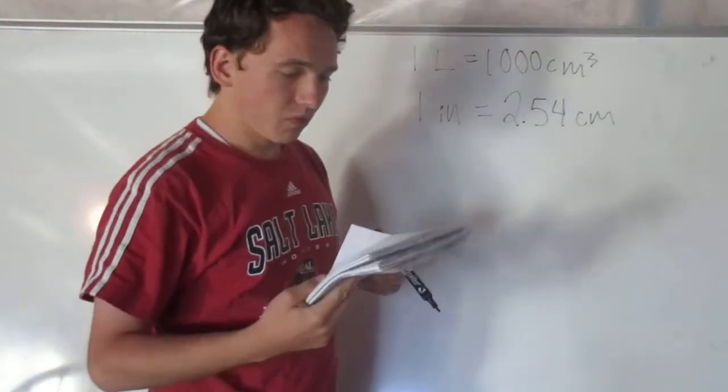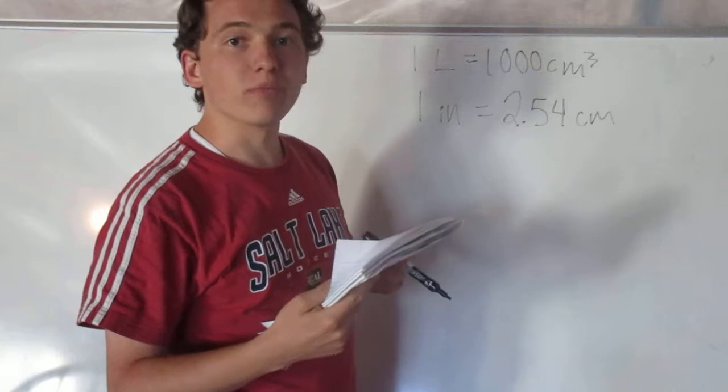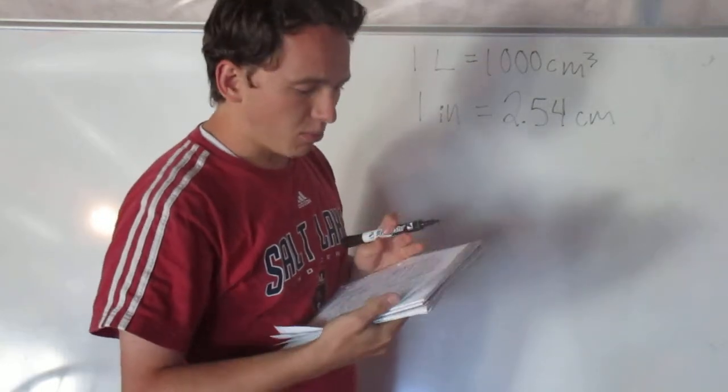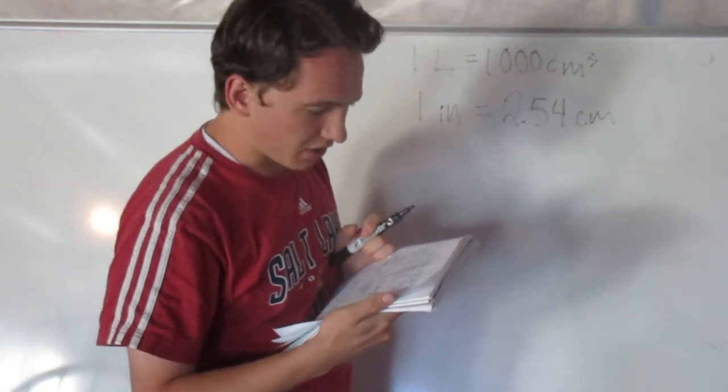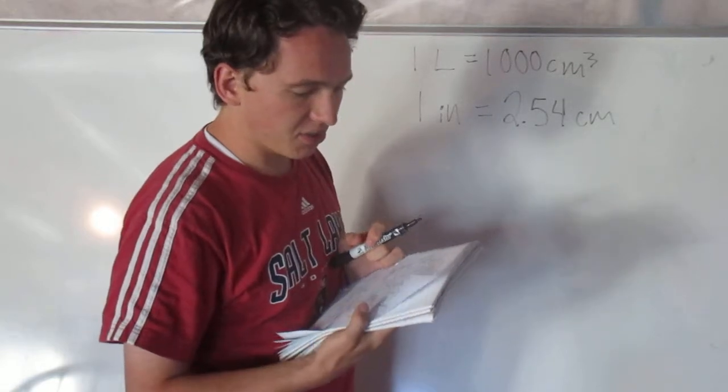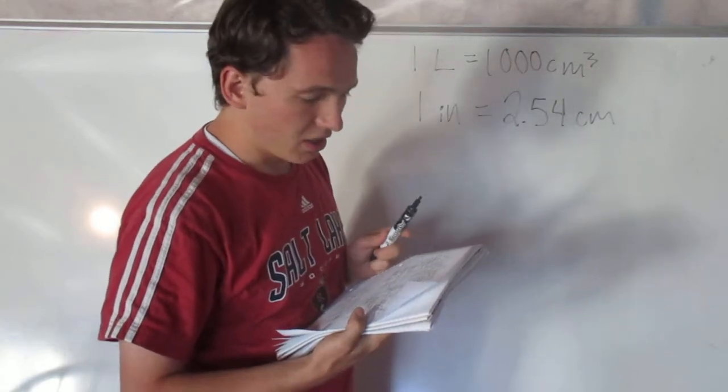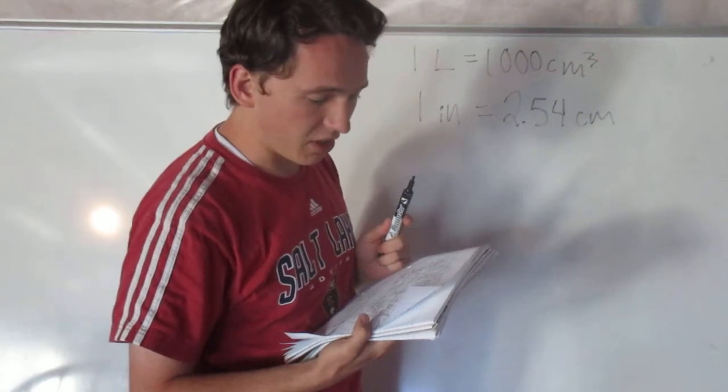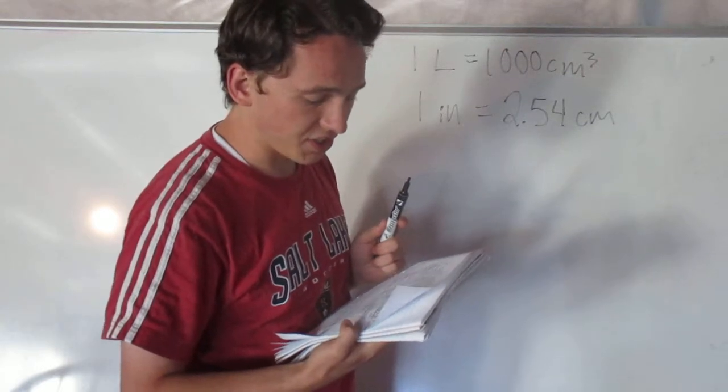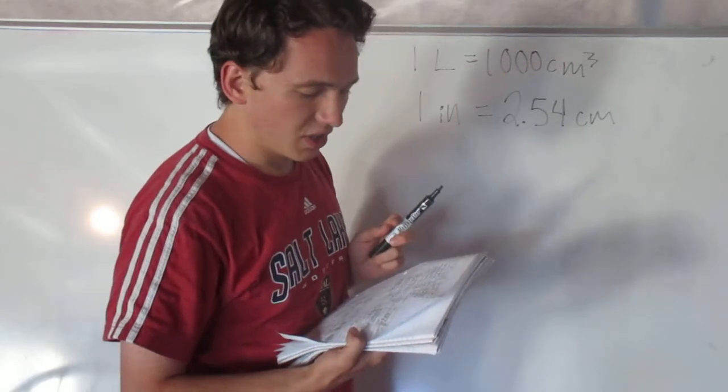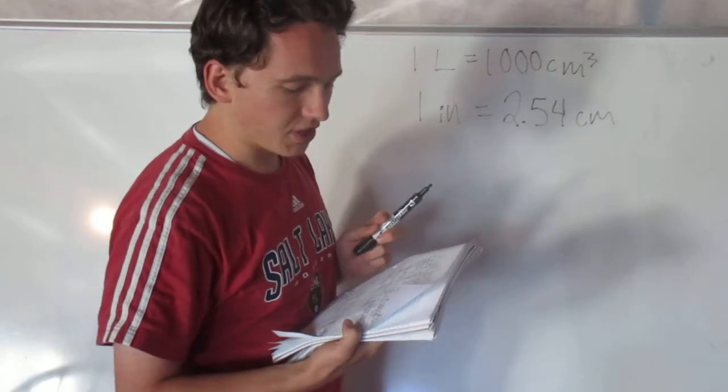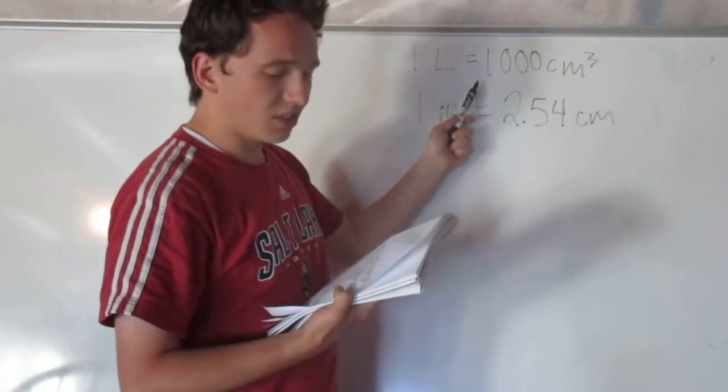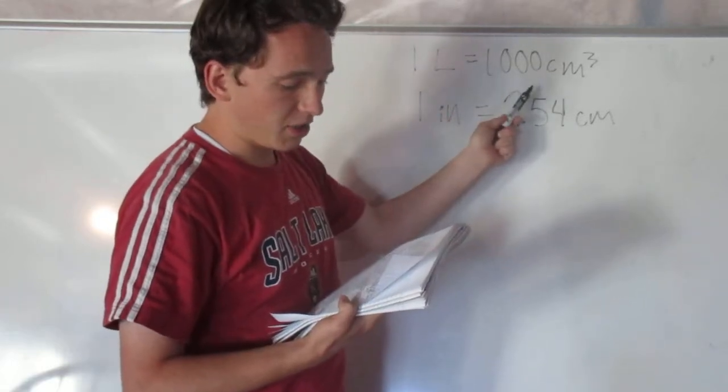Alright, so today we're going to be doing problem 1.5. Problem 1.5 says the most powerful engine available for the classic 1963 Chevrolet Stingray developed 360 horsepower and had a displacement of 327 cubic inches. Express the displacement in liters by using only the conversions 1 liter equals 1000 centimeters cubed and 1 inch equals 2.54 centimeters.